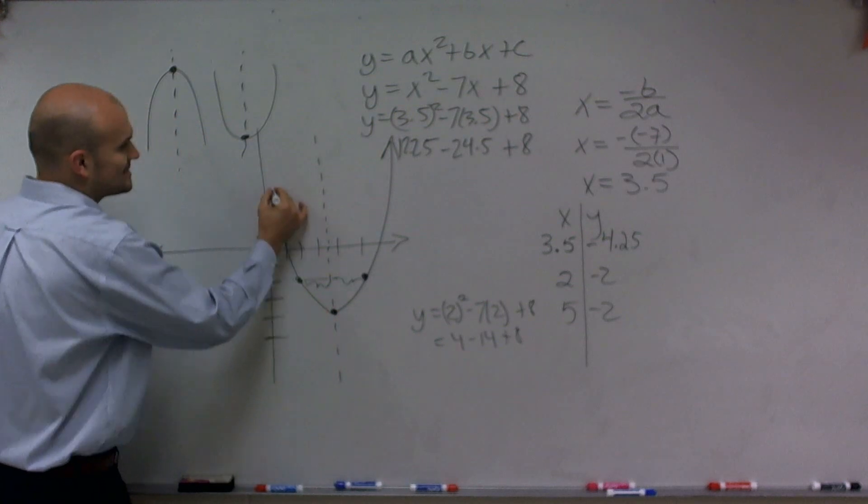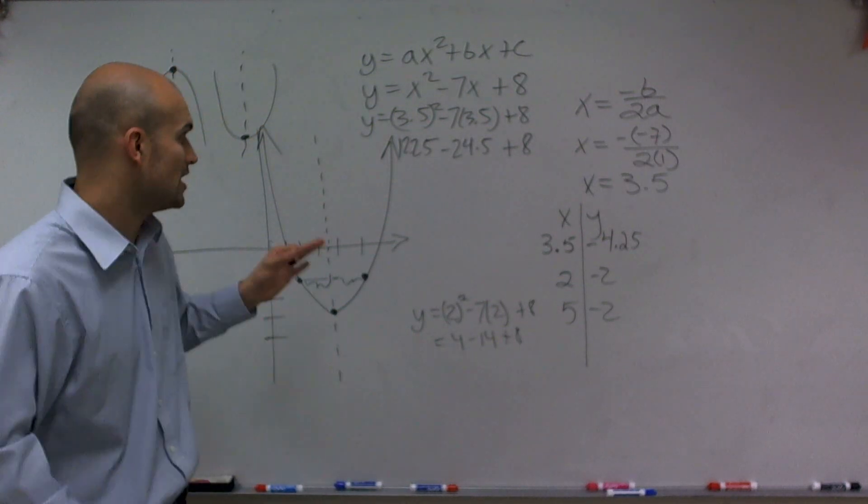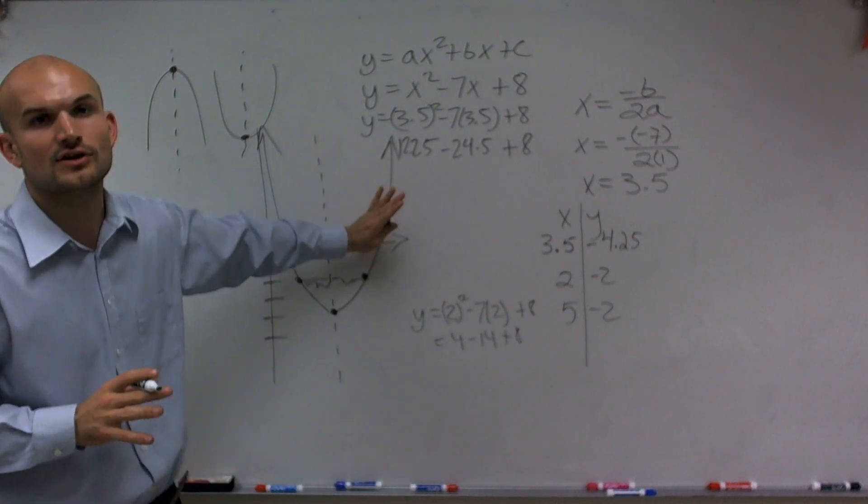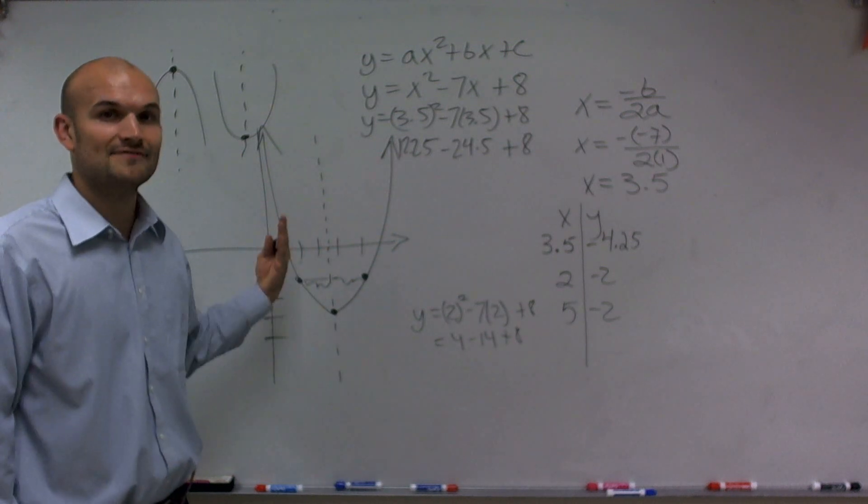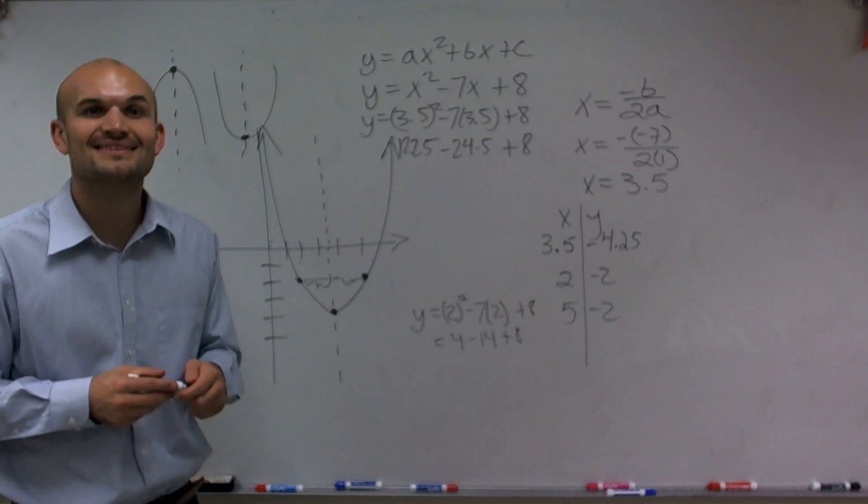And there's a couple of other ways that we can determine how to graph our function. You can also look at the x and y intercepts. But we'll just focus right now on determining the vertex and then choosing table of values that are to the left and to the right of your line of symmetry. So there it goes, ladies and gentlemen. That's how you graph a parabola. Thanks.